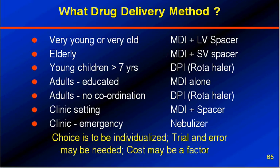For the very young and very old, use a metered-dose inhaler plus large volume spacer. For the elderly, MDI plus small volume spacer. Young children less than seven years and more than seven years will prefer rotohalers — they can interact with the device easily. Adults who are educated can use MDI alone without a spacer. Adults with no coordination should use a DPI or rotohaler. The rotohaler is very convenient and can be kept in a pocket. In clinic settings, MDI with a spacer; in clinic emergencies, a nebulizer. The choice should be individualized by trial and error, and cost may be a factor.